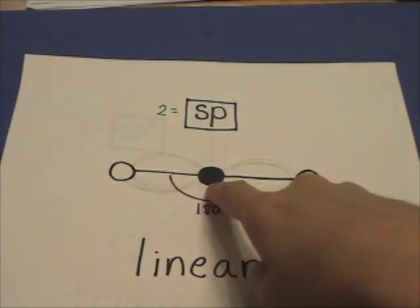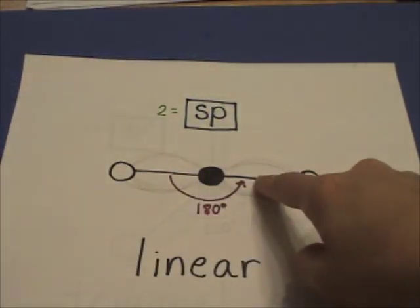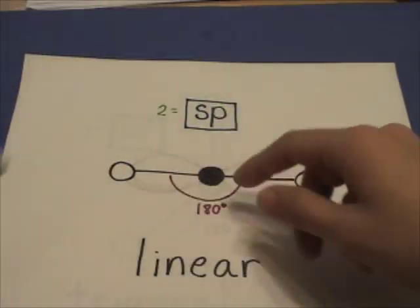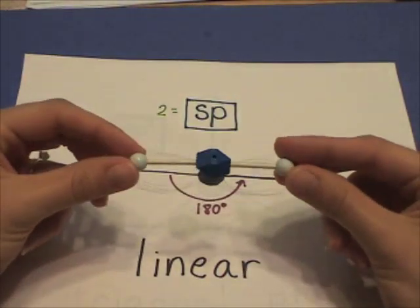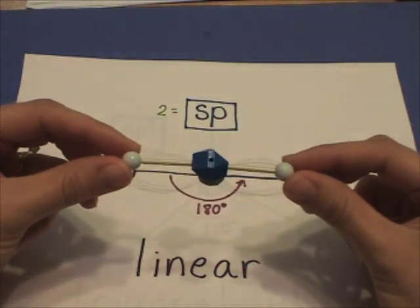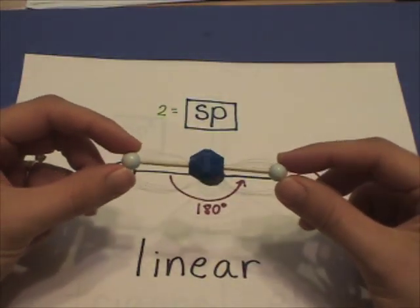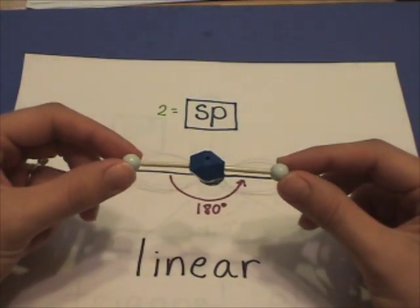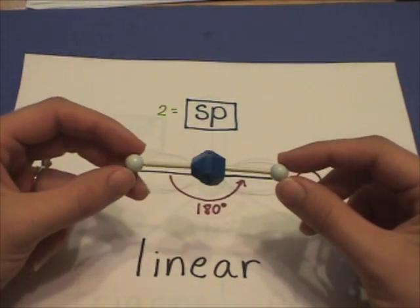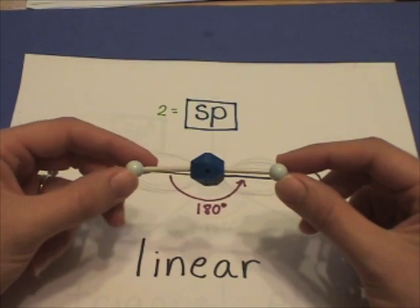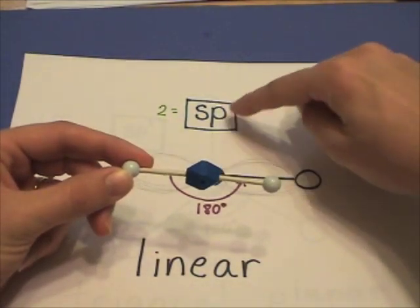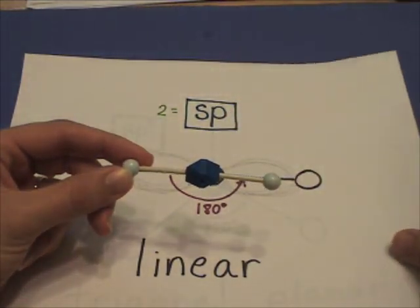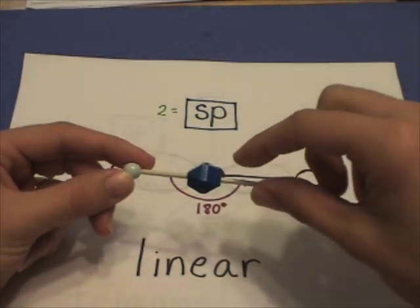If a central atom has two sigma bonds and no lone pairs, then the molecular shape is linear with a predicted 180 degree bond angle. This central atom is said to be sp hybridized.